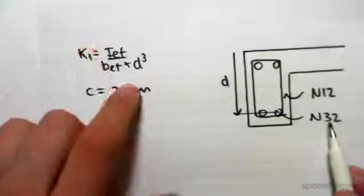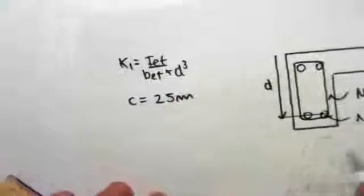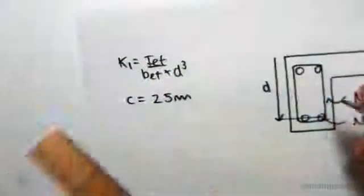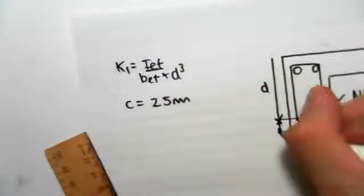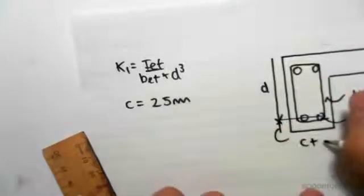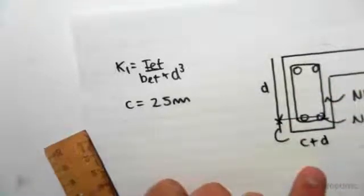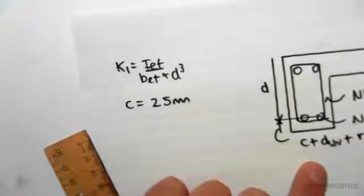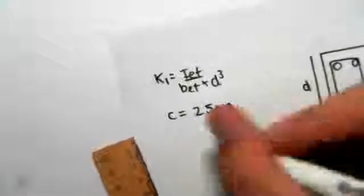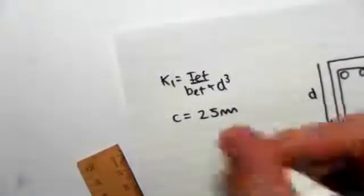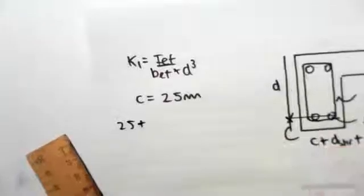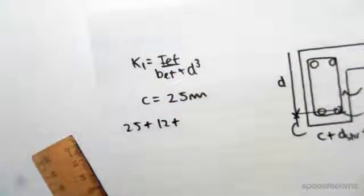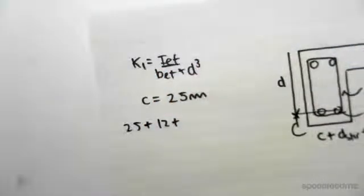So that means that our d, or rather this distance here, is going to be the cover plus the diameter of the stirrups plus the radius of a bar. If we work that distance out we would get: the cover is 25 plus the diameter of the stirrups would be 12 plus the radius of this n32 bar.